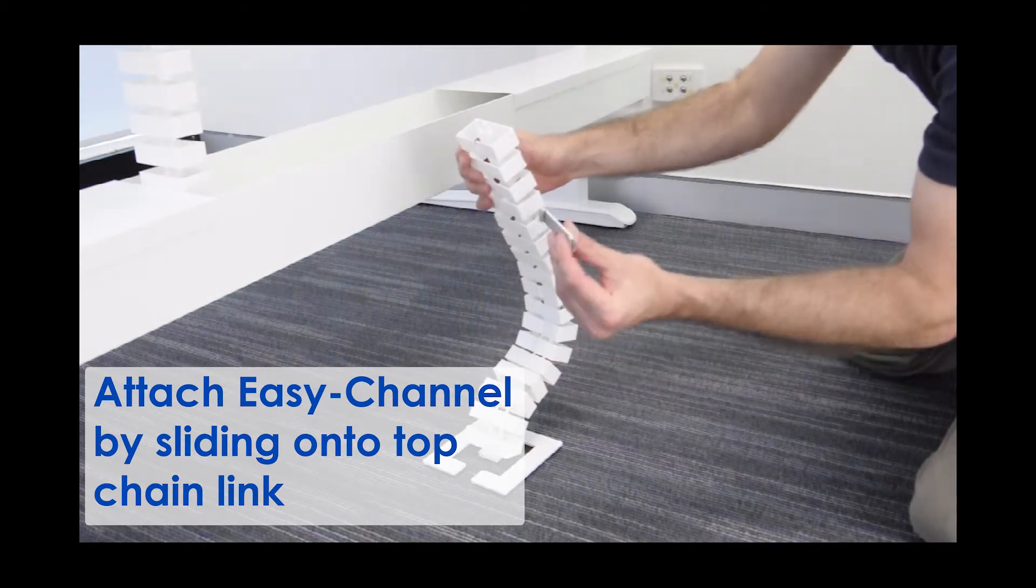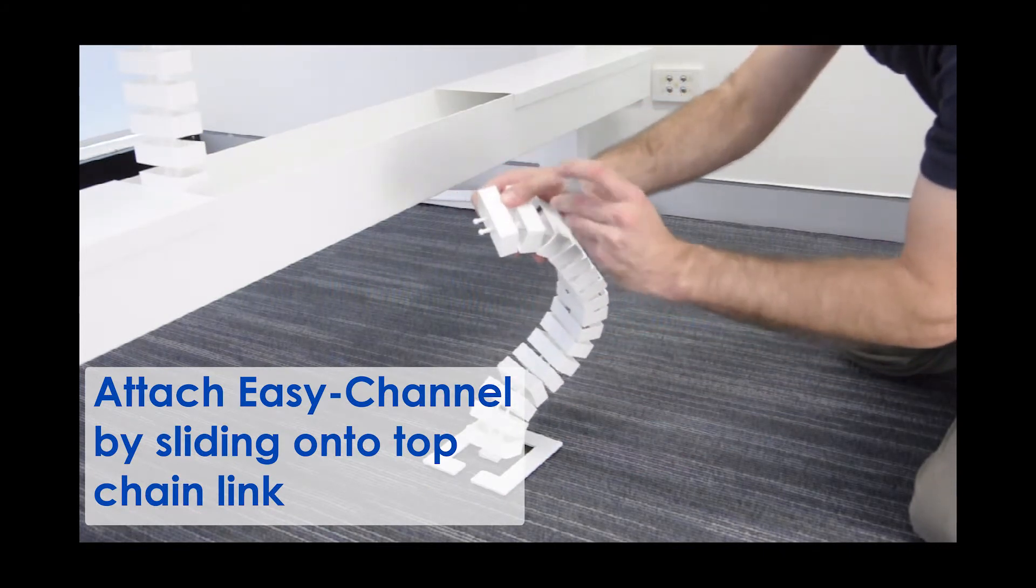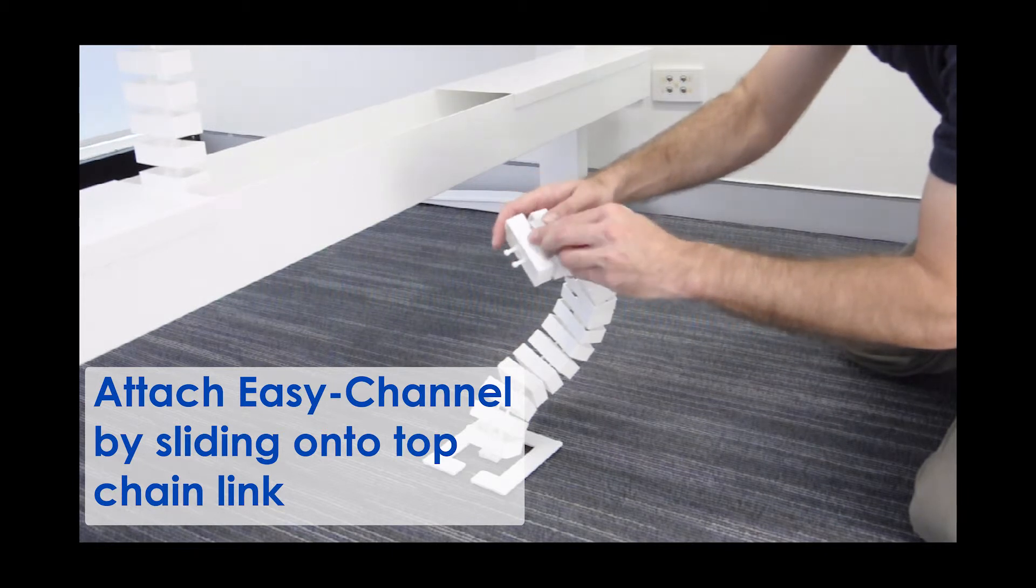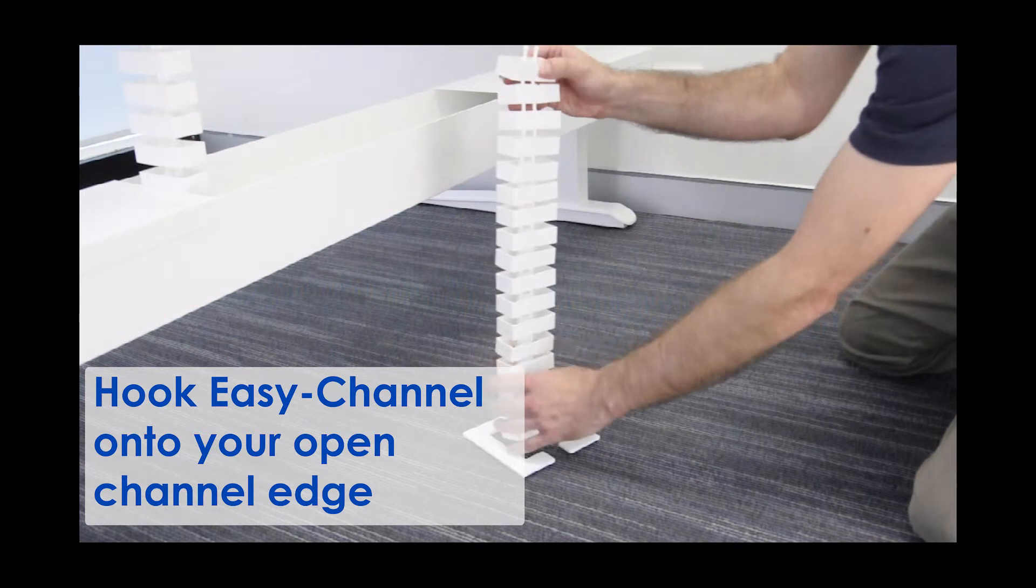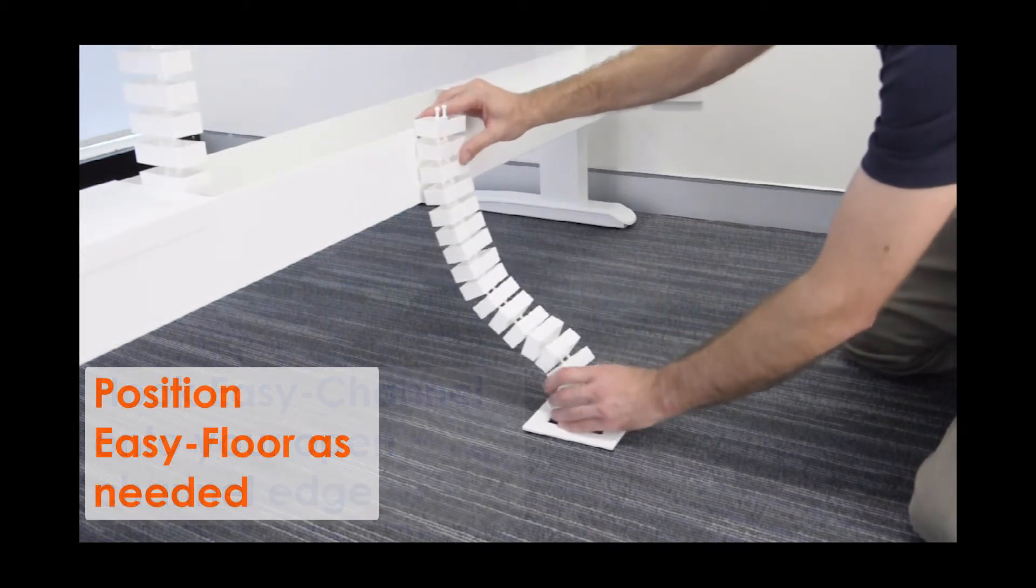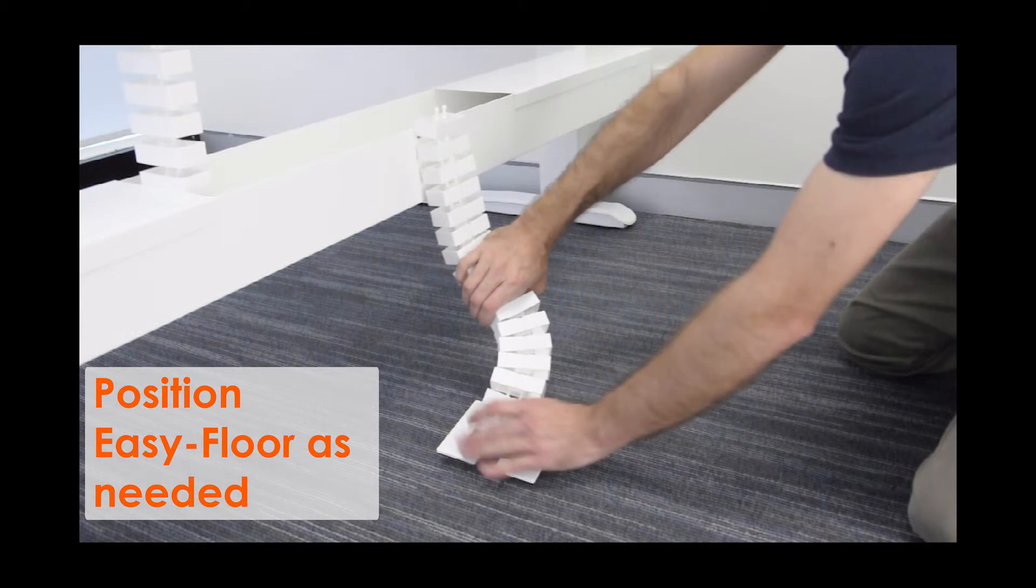Attach the Easy Channel by sliding the two prong side onto the top Cablesnake link. Hook the Easy Channel onto your open channel edge. Position EasyFloor as needed.